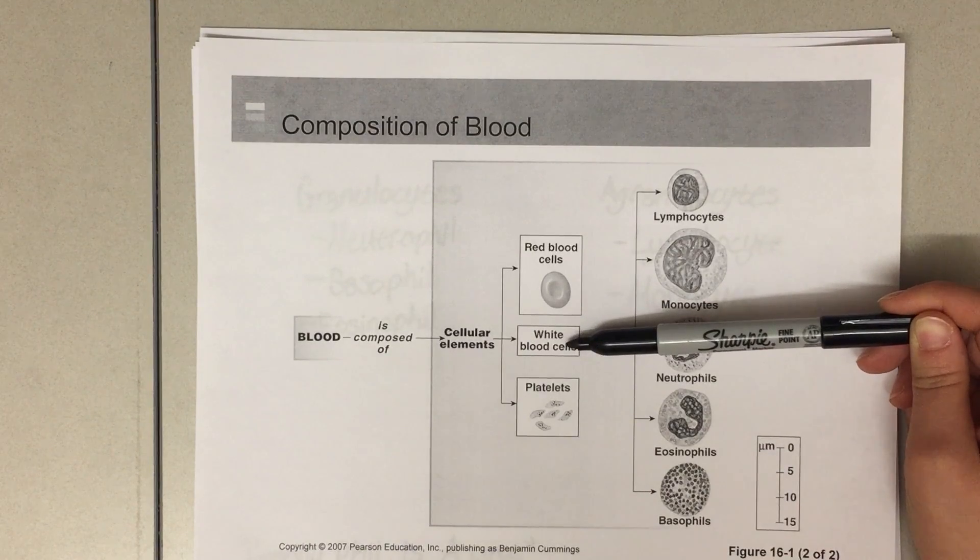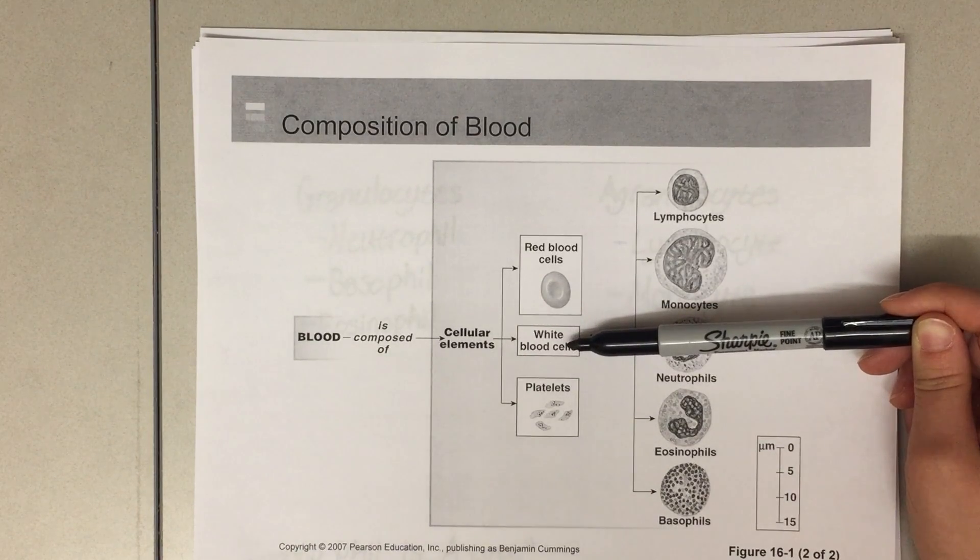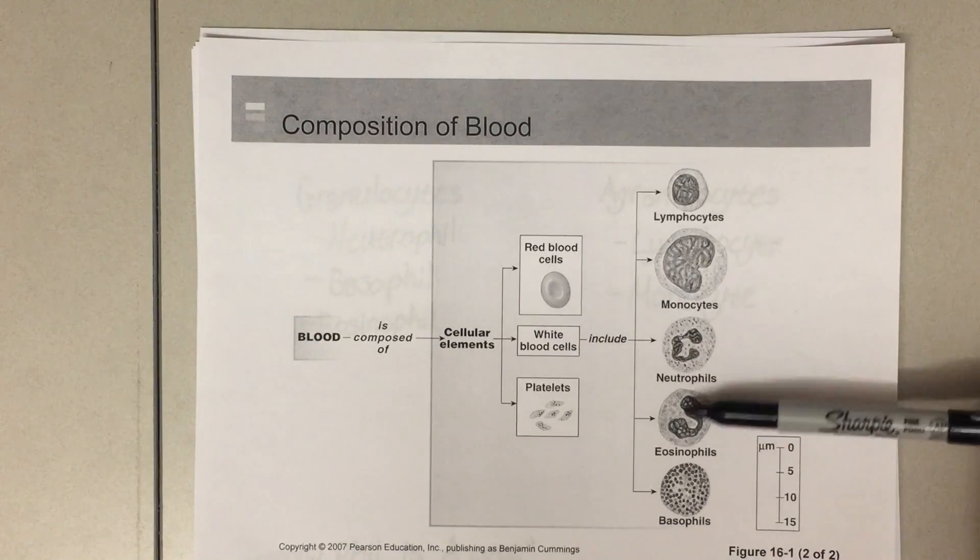The third type is white blood cells. White blood cells are also called leukocytes, and there are five distinct types.